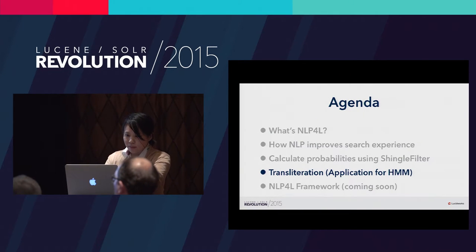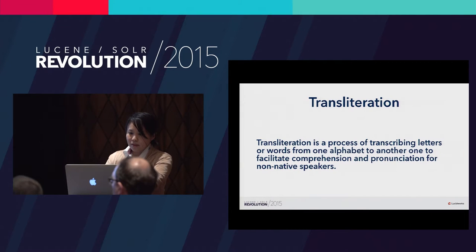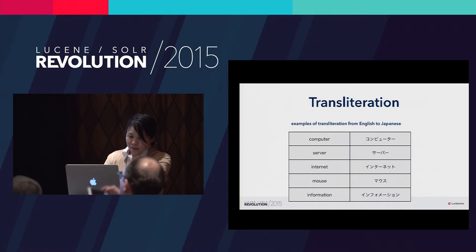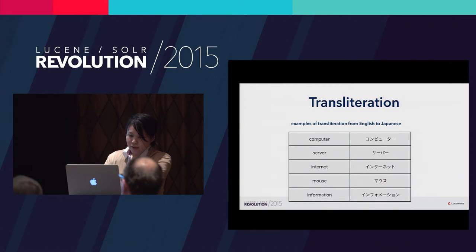Let's see an interesting application: transliteration, which NLP4L provides using HMM. Transliteration is a process of transcribing letters or words from one alphabet to another to facilitate comprehension and pronunciation for non-native speakers. Here is an example of transliteration between English and Japanese. All Japanese words here originated from English words — they are called loanwords. Usually, Japanese loanwords are written in katakana to simulate the pronunciation of original words. Japanese speakers often use English words in documents but use katakana for queries, or vice versa.